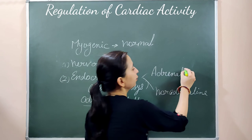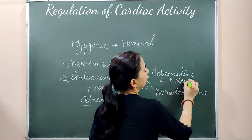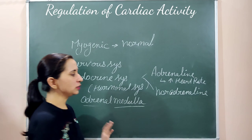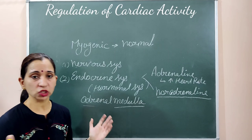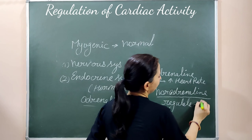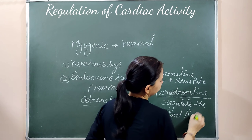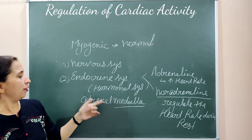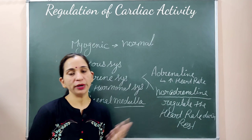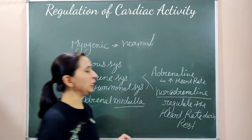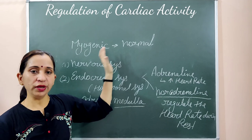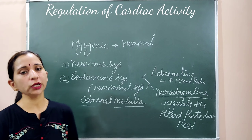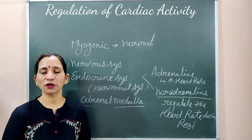Adrenaline increases the heart rate during exercise and stress conditions. Noradrenaline regulates the heart rate during rest condition, bringing it back to normal. So adrenaline increases the heart rate and noradrenaline normalizes it during rest. In general, the human heart is myogenic where the nodal tissue controls functioning, but during special conditions the nervous system and endocrine system regulate cardiac activity.